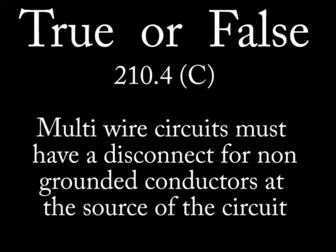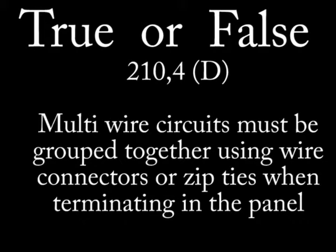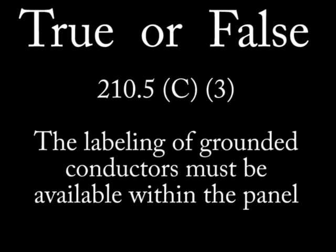Question 6: Article 210.4 paragraph C — multi-wire circuits must have a disconnect for non-grounded conductors at the source of the circuit. Question 7: Article 210.4 paragraph C — a multi-wire circuit can be in excess of 120 volts to ground. Question 8: Article 210.4 paragraph D — multi-wire circuits must be grouped together using wire connectors or zip ties within the panel. Question 9: Article 210.5 paragraph A — identification of grounded conductors is not needed once they are terminated in the panel.